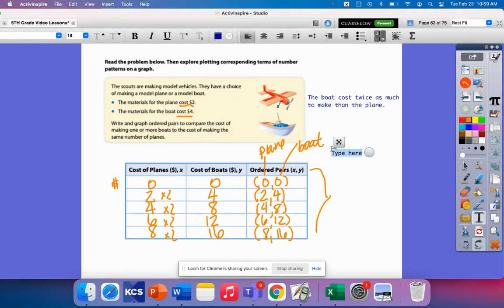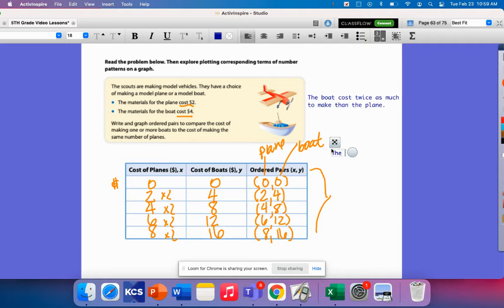I think I could also say, like if I think about if I divided the cost of the boat by two, so the plane cost two times less than the boat. I could make these two statements about the patterns that I see here.